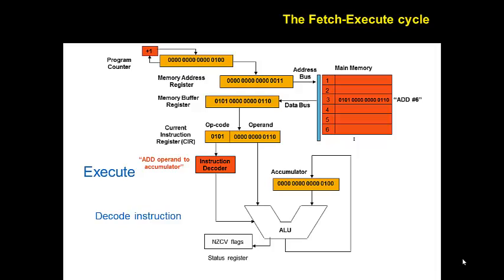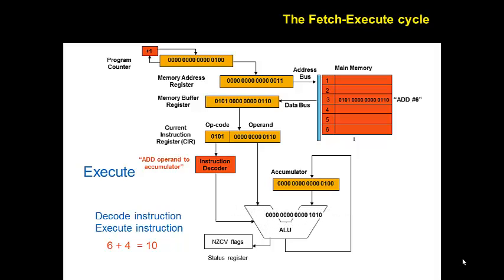To perform this operation within the CPU, as we move into the execute phase, the operand part of the machine code instruction will be copied to the arithmetic logic unit — the ALU. For this instruction we also need the contents of the accumulator. These two items are added together, the instruction is executed, and the result of the operation is stored in the accumulator.